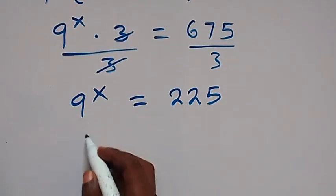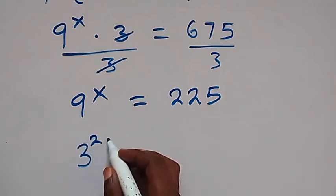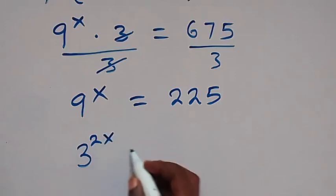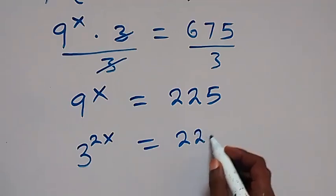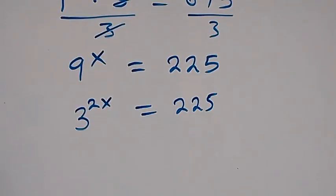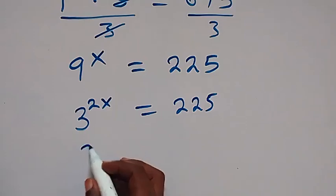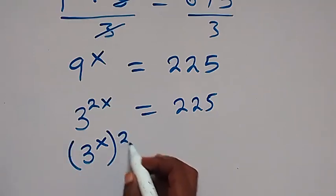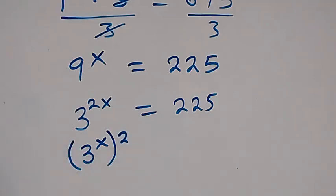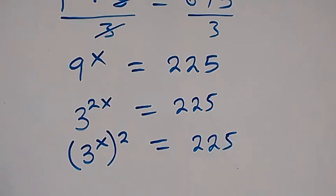We can write 9 as 3 squared, so 3 squared raised to power x equals 225. Applying the law of indices, this becomes 3 raised to the power 2x equals 225.